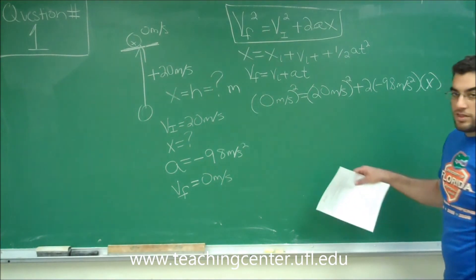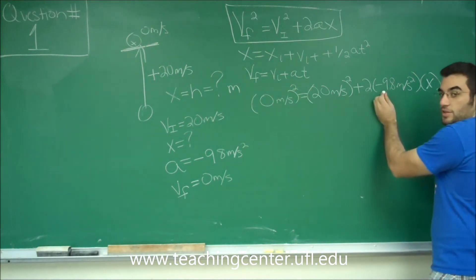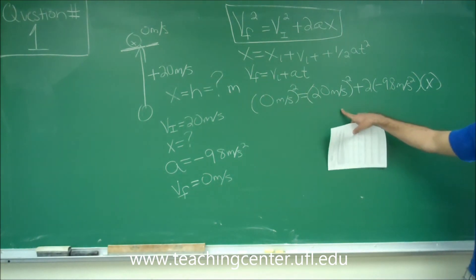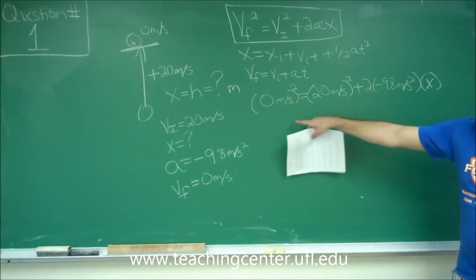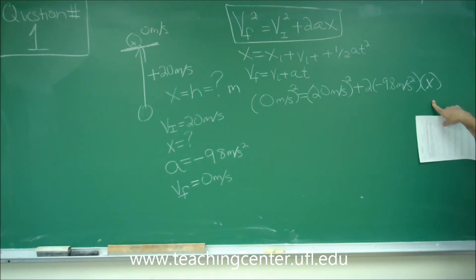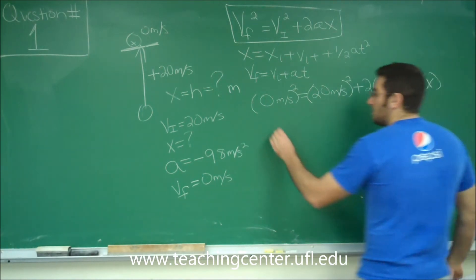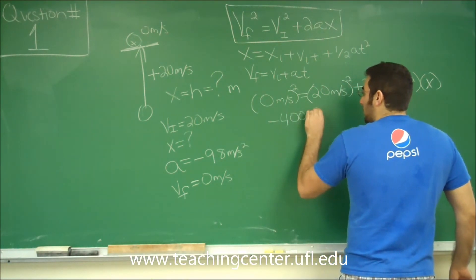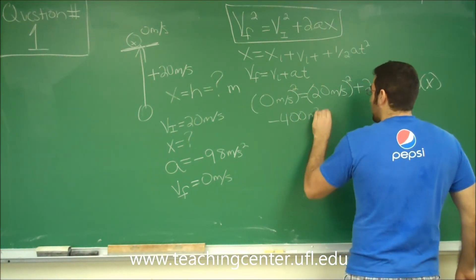If we rearrange everything for x, make sure you see that you leave the negative in for the 9.8 meters per second squared because we subtract the initial velocity to the other side so that we get a positive height or a positive time because we can never get a negative time in such questions. So it ends up looking like negative 400 meters squared per second squared divided by negative 9.8 meters per second squared.